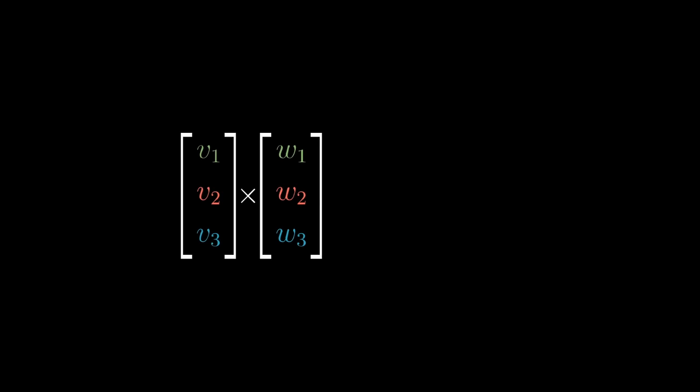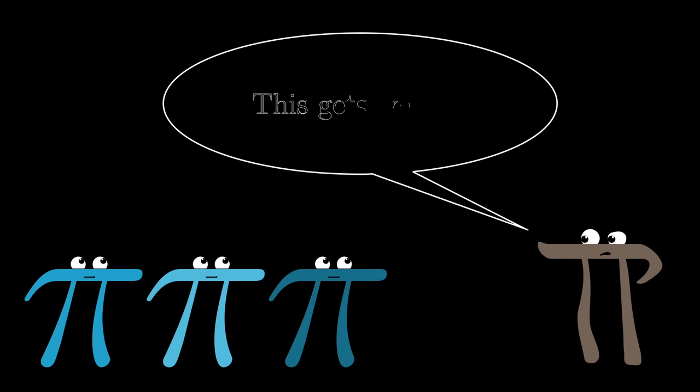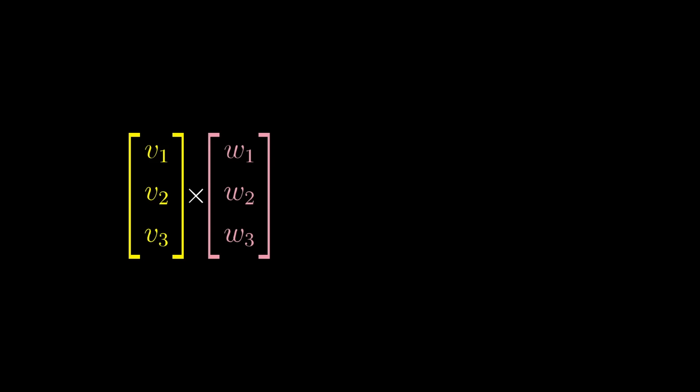For more general computations, there is a formula that you could memorize if you wanted. But it's common and easier to instead remember a certain process involving the 3D determinant. Now, this process looks truly strange at first. You write down a 3D matrix where the second and third columns contain the coordinates of v and w.